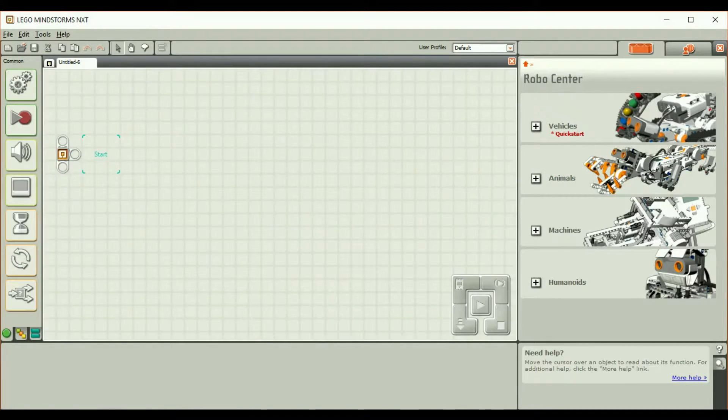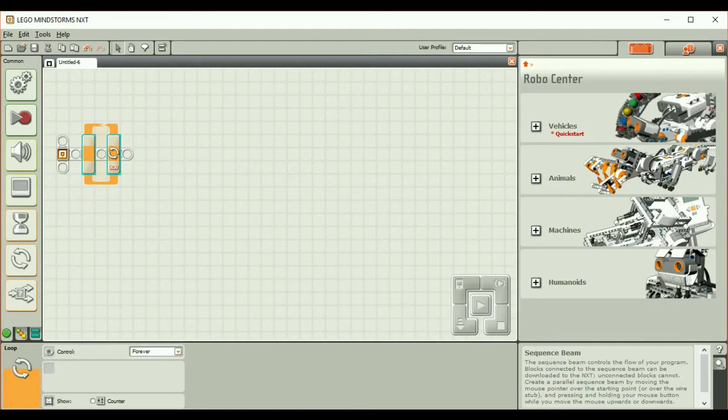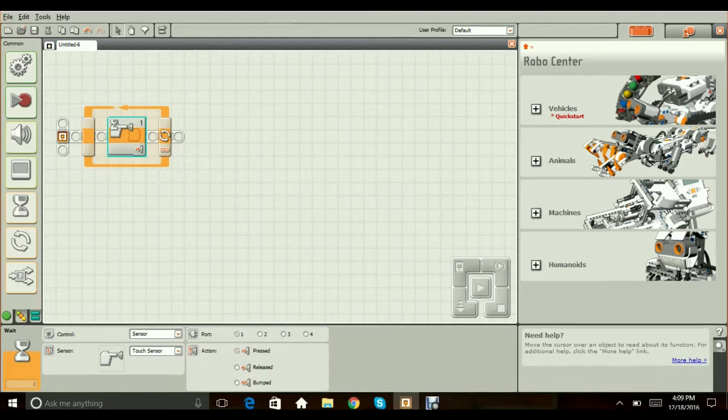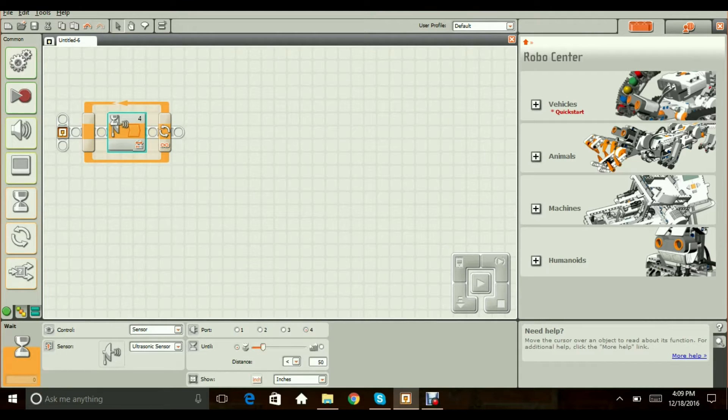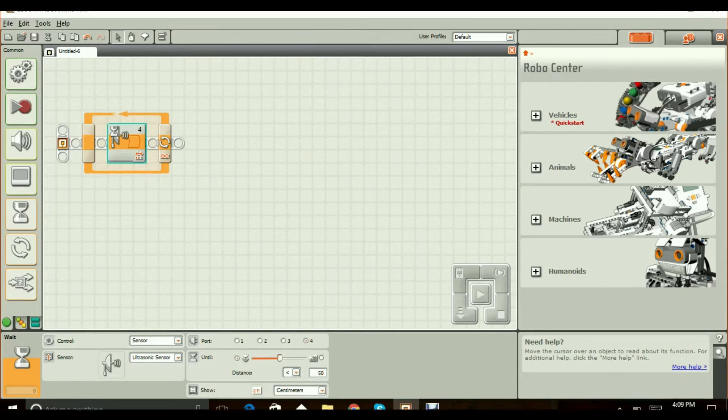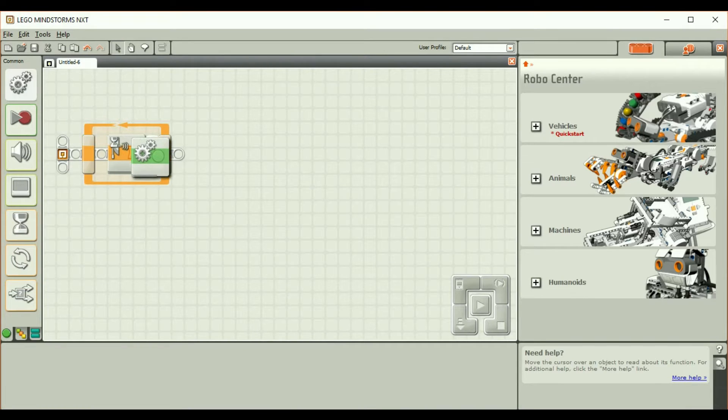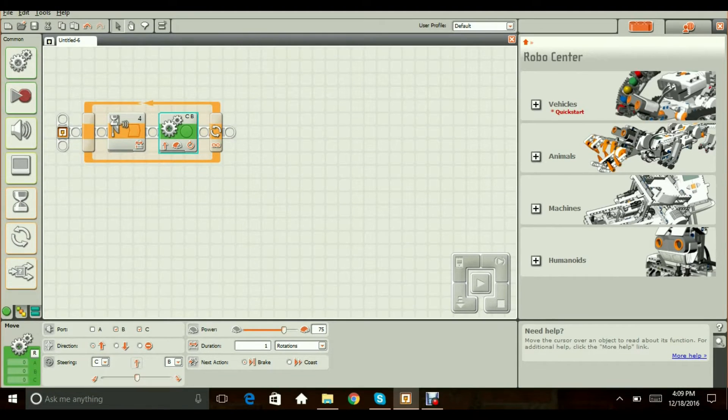Okay, now let's create a new program by pressing the go button. Now let's bring in the loop and then let's bring in a sensor. I don't want touch sensor, I want ultrasonic sensor. I don't want inches, I want centimeters, and I don't want that number, I want 50. Then let's bring the motor in, BC motor.